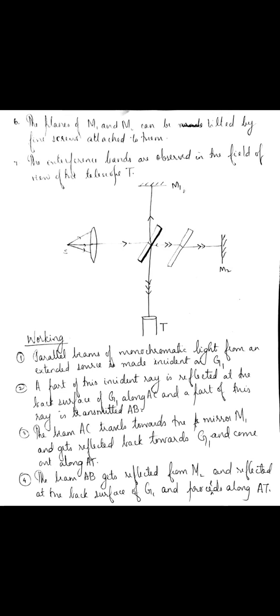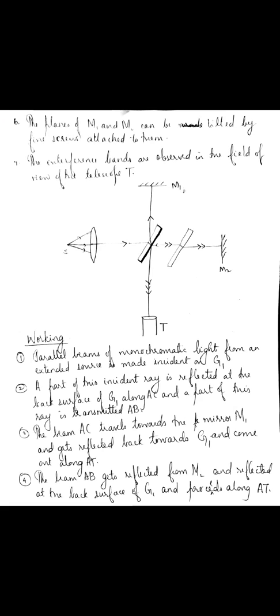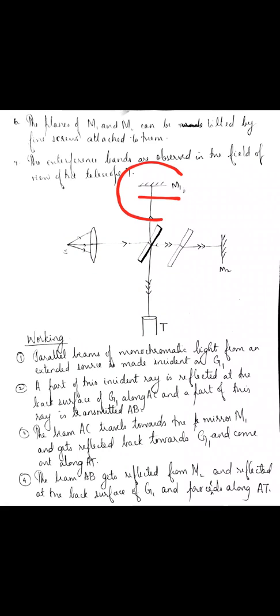The path difference between the interfering rays is now purely equal to the distance travelled by one ray through air two times and the distance travelled by the other ray through air. In the last class I had told you that a virtual image of mirror M2 will be obtained somewhere here as M2 dash — either above, below, or coinciding with M1 — so that the whole Michelson's interferometer becomes equivalent to a thin air film enclosed between M1 and M2 dash.